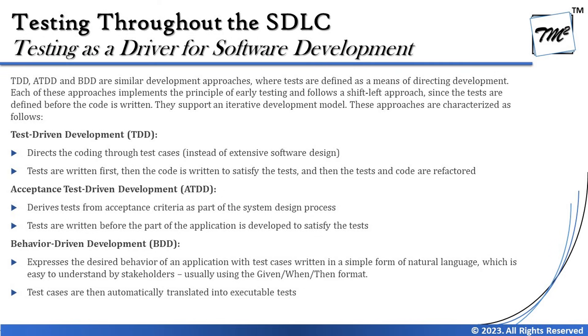The first approach is TDD — test driven development. At a very high level, TDD directs the coding through test cases instead of extensive software design. Tests are written first, then the code is written to satisfy the tests, and then both tests and code are refactored. Beyond the syllabus, test driven development is an approach where unit test cases are written prior to the unit codes, meaning simple programs are written with test cases being written first.